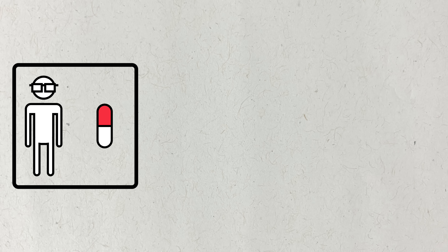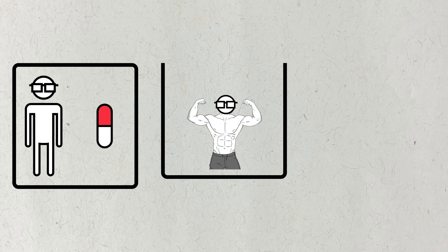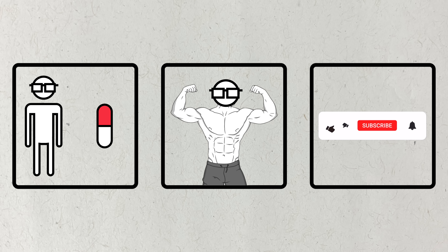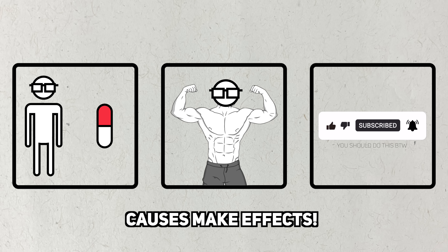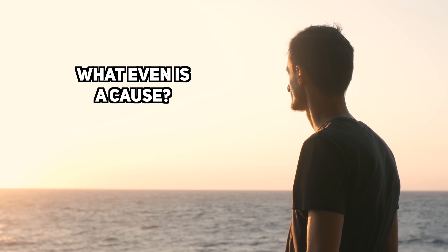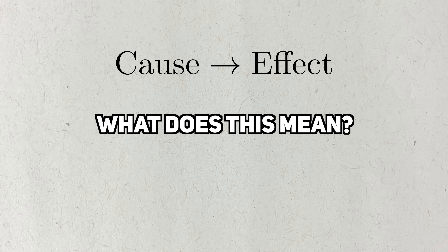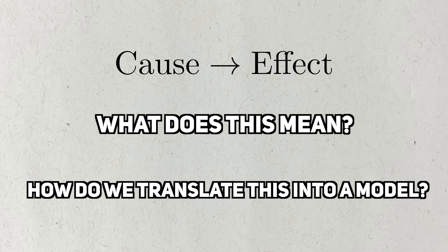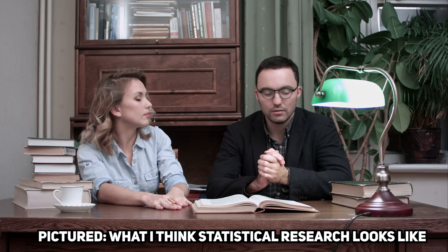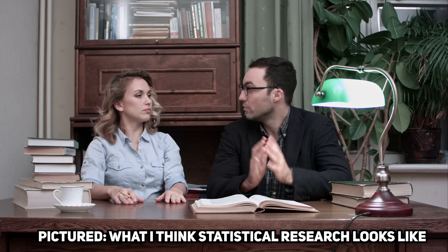When I take a painkiller, I expect my headache to go away. When I lift weights at the gym, I expect some gains. When you watch a video I make, you click the subscribe button. Causes make effects. But when you stop to really think about it, it can be really hard to define what a cause is. What does it mean for one event to cause another to happen? Furthermore, how can you formalize this in terms of a statistical model? Luckily for us, people much smarter than me have thought about this question a lot and turned it into its own subfield of statistics.